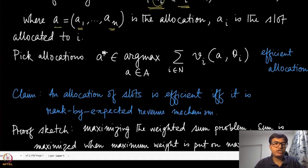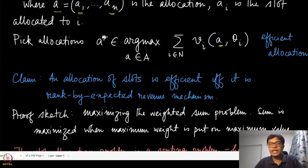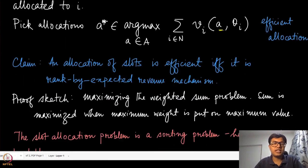Now, because we are actually looking at the efficient allocations, we are going to pick the allocation which maximizes the sum of the valuations of these agents. This is the same as the BCG mechanism as we have done before. The claim is that if you are doing this kind of allocation, the efficient allocation, it is going to be efficient if and only if it is ranked by expected revenue mechanism.